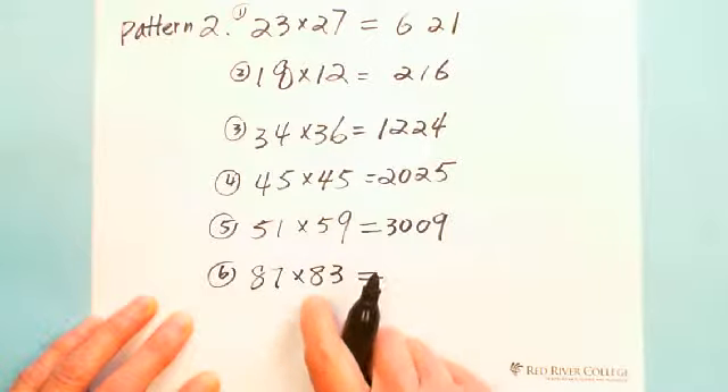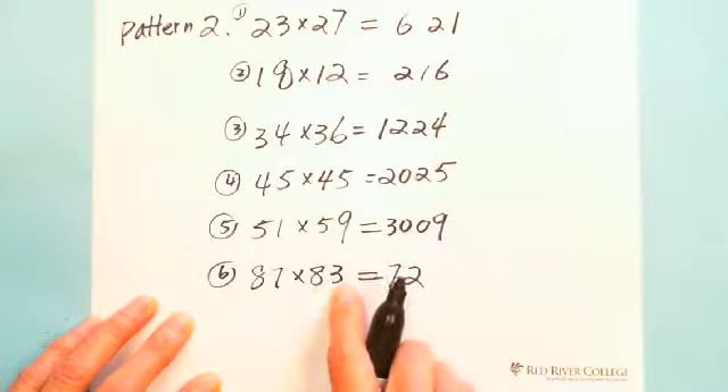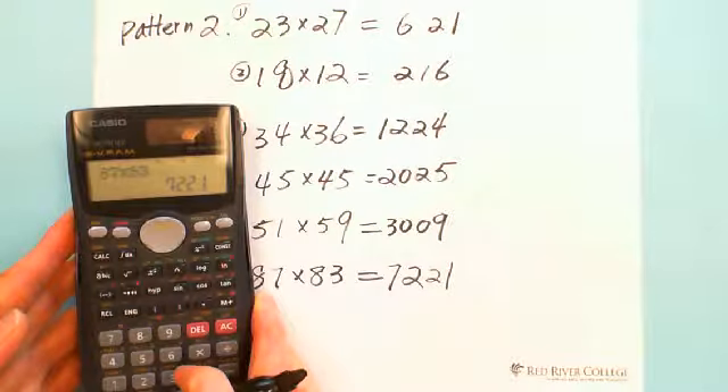87 times 83. See, the first digit is the same, so it will be 8 times 9 is 72. The last digit is 7 times 3 is 21. See, I'll show you on the calculator. 87 times 83 equals 7221. See, this will make you very fast.